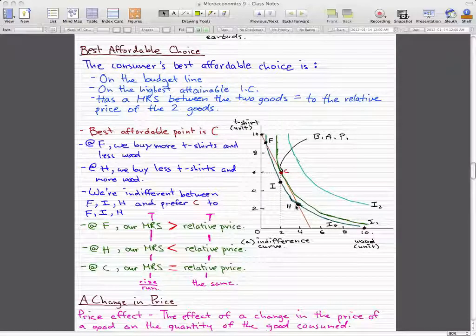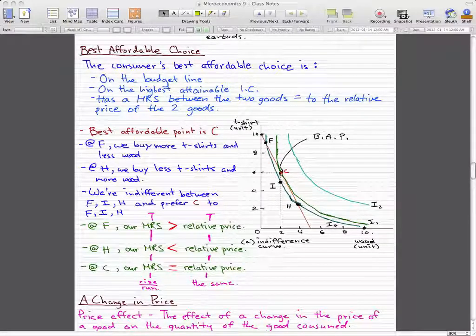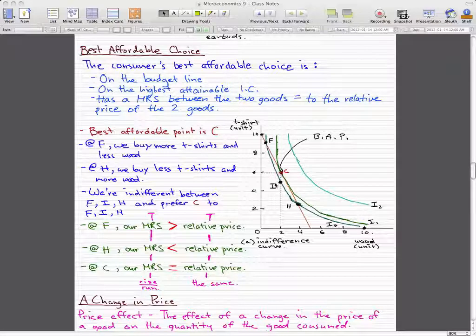At point H, we buy less t-shirts and more wood. So we're indifferent between F, I, and H, but we prefer C to F, I, and H. Because F, I, and H are on the same indifference curve, indifference curve I0.